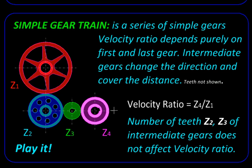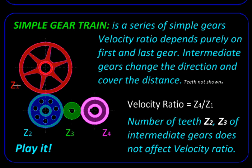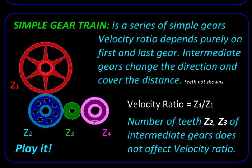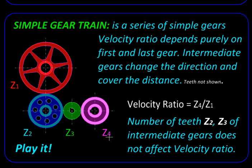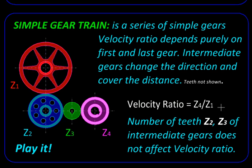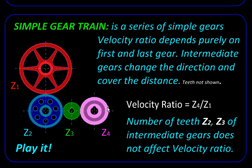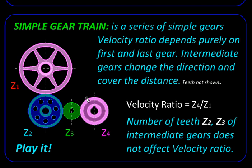The velocity ratio is just a function of the number of teeth on the first gear z1 and the number of teeth on the last gear z4, and that gives us the velocity ratio. Since all these gears are connected to each other and engaging with each other forming a chain, all of them must have the same module or the same pitch, and therefore their sizes will be directly proportional to the number of teeth that they have.